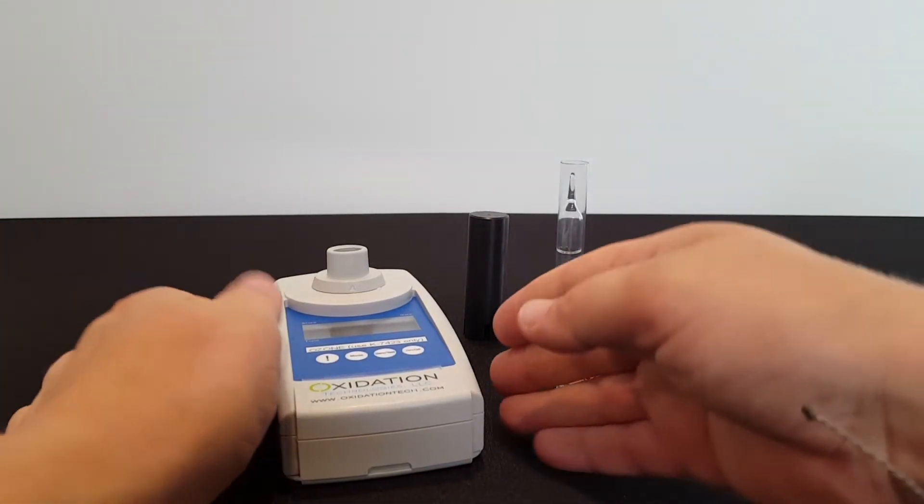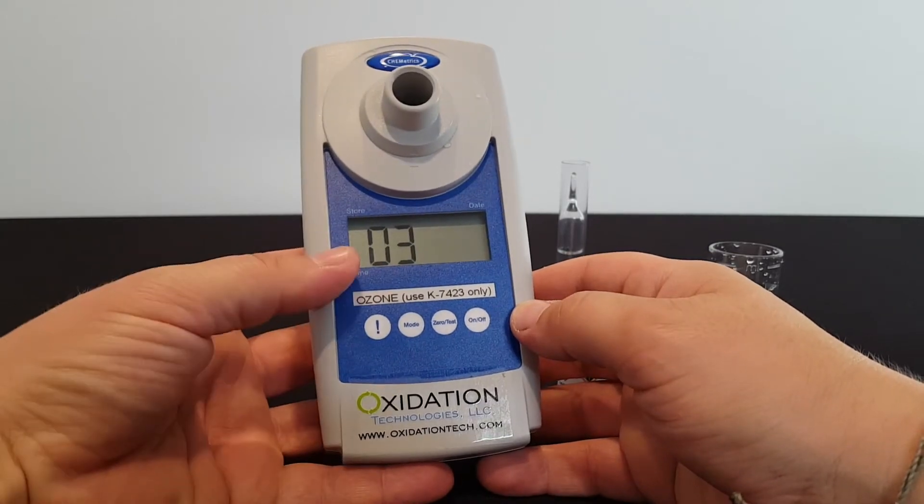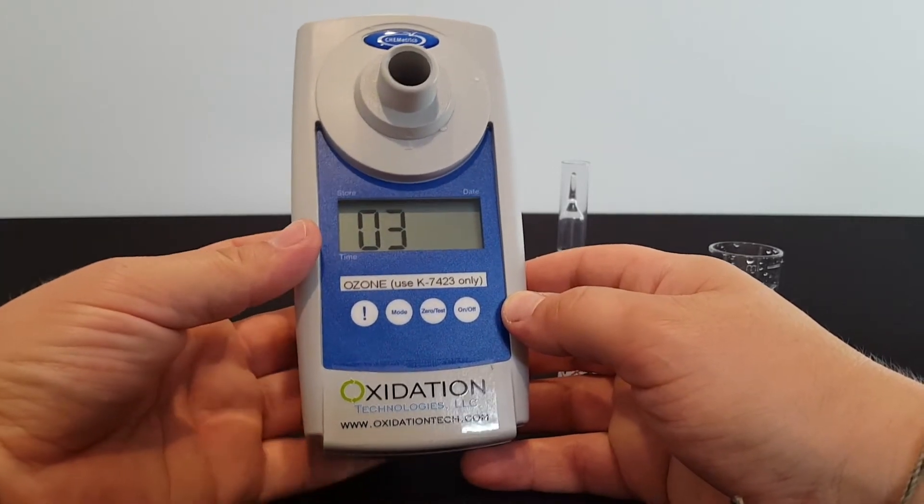So the first step is going to be zeroing the meter. We need to turn it on. When I turn it on, the O3 symbol appears.